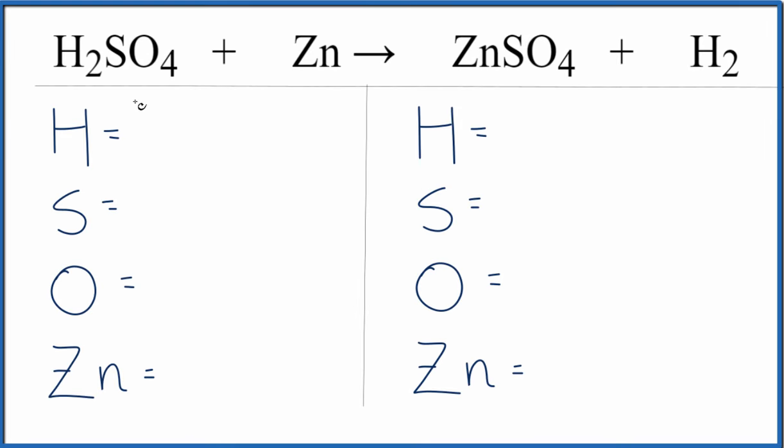In this reaction we have sulfuric acid plus zinc. This is a single replacement reaction or a single displacement reaction because the zinc comes in and it pushes the hydrogen out, and we end up with zinc sulfate and the hydrogen by itself.